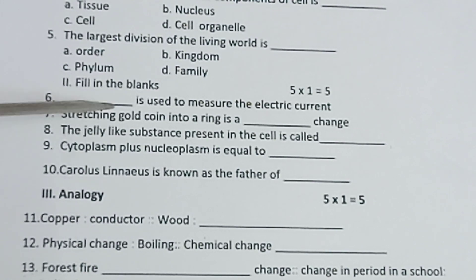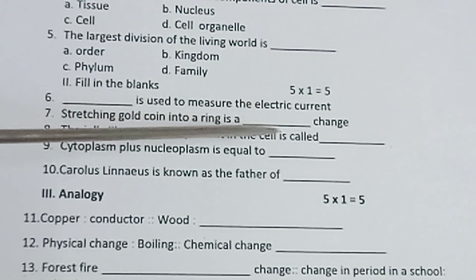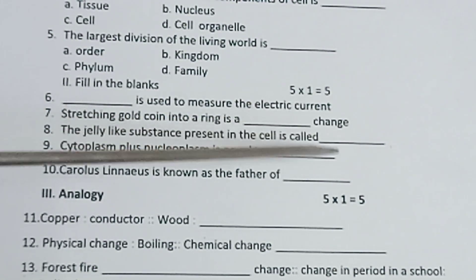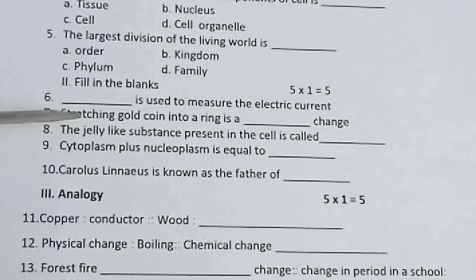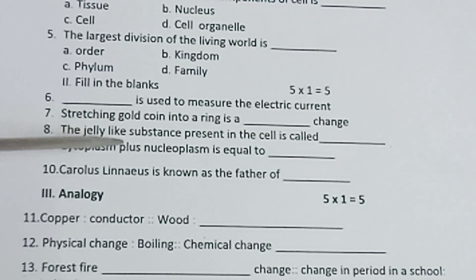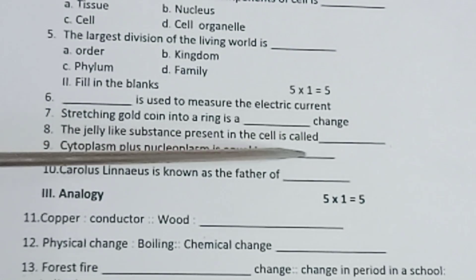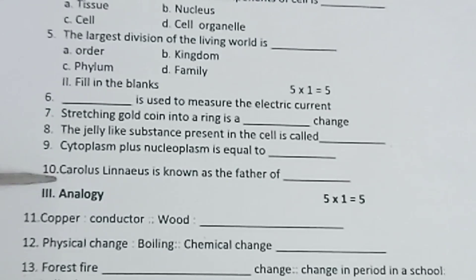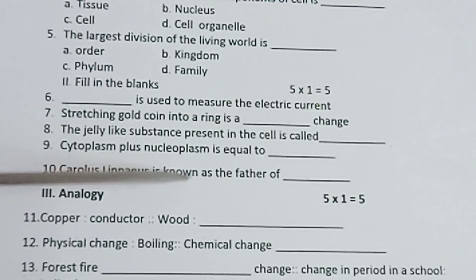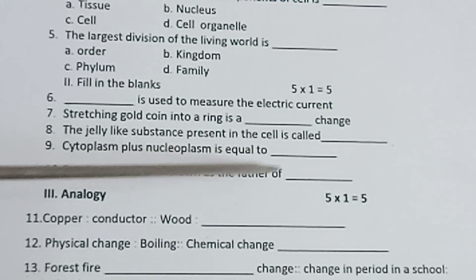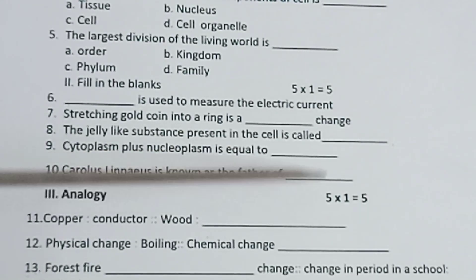Eighth one: The jelly-like substance present in the cell is called dash. Ninth one: Cytoplasm plus nucleoplasm is equal to dash. Tenth one: Carolus Linnaeus is known as the father of dash.